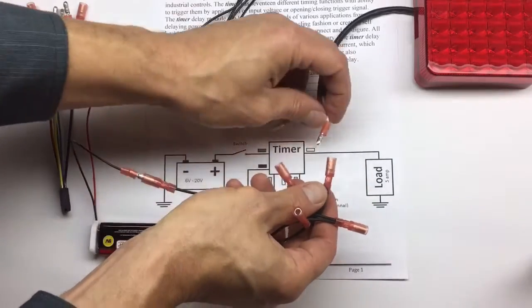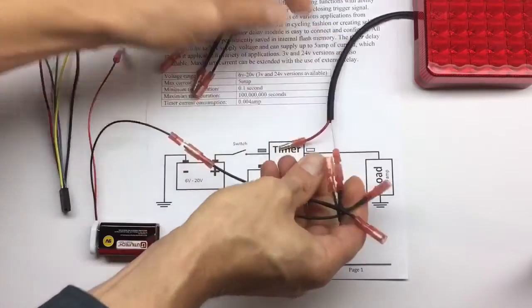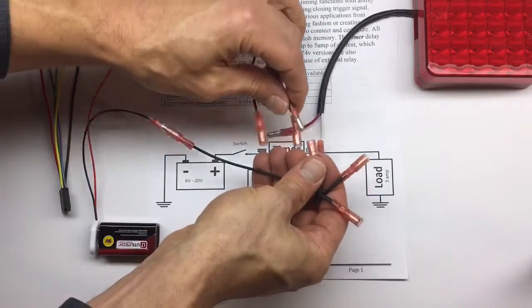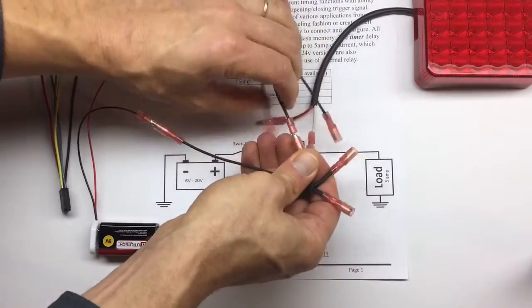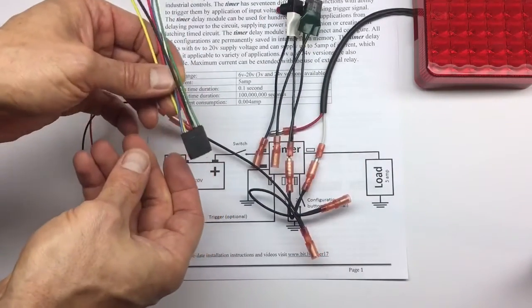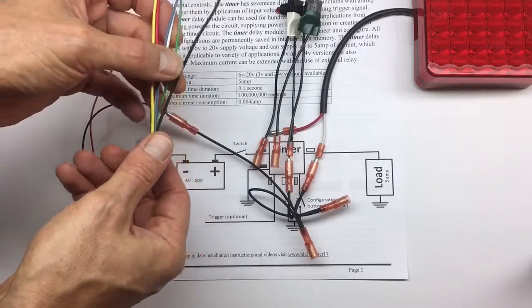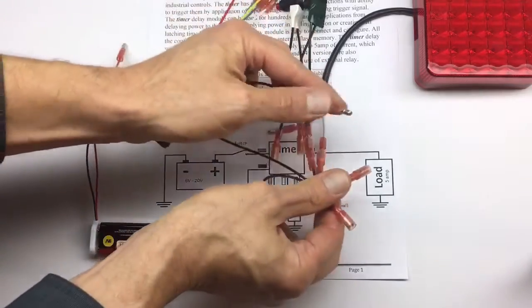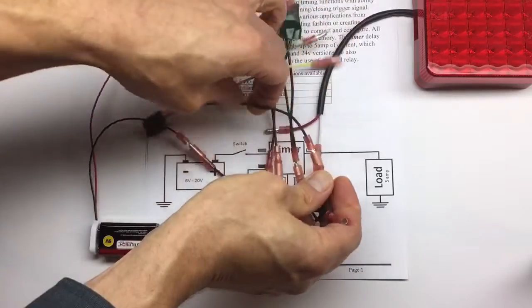I'm going to use the ground from the light connected to the ground. I'm going to use the ground from the buttons, connect also to the ground. I'm going to use the timer black wire and connect it to the ground. So we connected all the grounds.